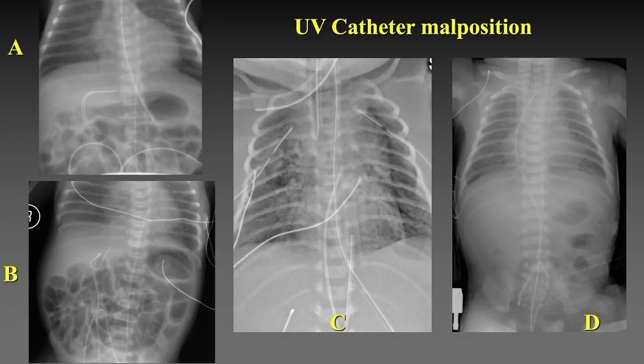Here are four examples of UV catheter malposition. Case A shows the UV catheter tip in the left portal vein. In case B, the catheter is coiled within the liver, probably at the junction of the ductus venosus and portal veins. Case C shows the UV catheter coursing into the right ventricle and entering the right ventricular outflow tract. Case D shows the UV catheter threaded up into the superior vena cava.